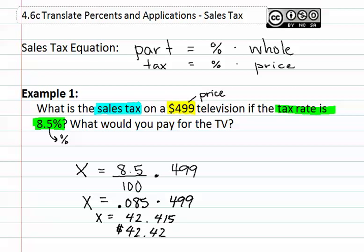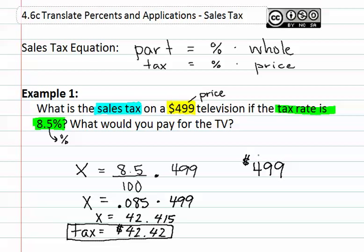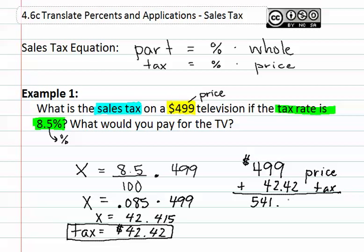This answers the first question of what is the sales tax. Next, we will need to determine how much we will actually pay total. To find the total you pay, you take the original price of the item, $499, and add the additional amount of tax we are paying, $42.42. When we add these two together, we get the total price, which is $541.42.